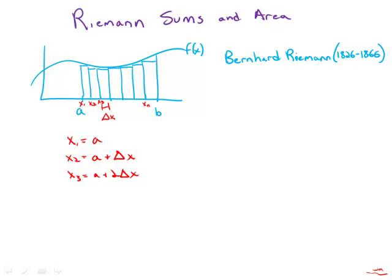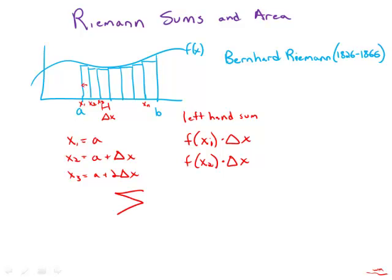Then we're going to take a sum of the areas of those rectangles. We could call this a left-hand sum. We could also do a right-hand sum or a midpoint sum, but let's focus on the left-hand sum. For every rectangle, we go to the left side, use that x-coordinate, and plug it into the function. So the first rectangle has an area of f(x1) times delta x, the next is f(x2) times delta x, and so forth. We can write this in summation notation as the sum from i equals 1 to n of f(x sub i) times delta x.